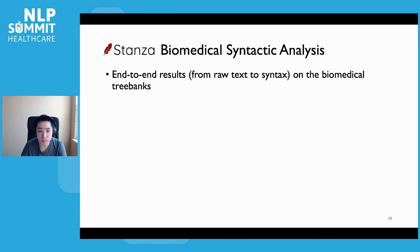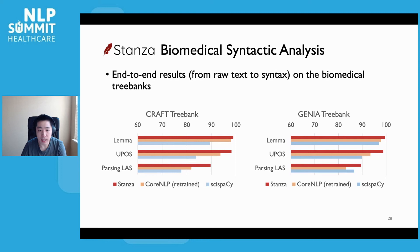For the biomedical syntactic analysis pipelines, we offer two separate choices based on two different publicly available biomedical treebanks: CRAFT and GENIA. CRAFT is focused on analyzing full-text biomedical articles, and GENIA is focused on analyzing biomedical abstracts. We benchmark these two pipelines against existing widely used syntactic analysis toolkits, including a retrained version of CoreNLP and a biomedical extension of spaCy named PsySpaCy, on lemmatization, part-of-speech tagging, and dependency parsing. On both CRAFT and GENIA treebanks, Stanza outperforms both CoreNLP and PsySpaCy on almost all tasks tested.